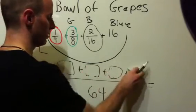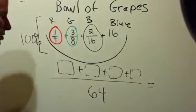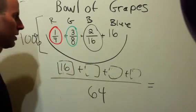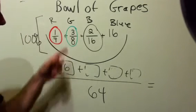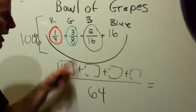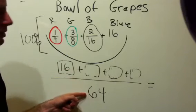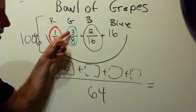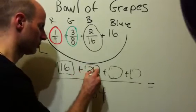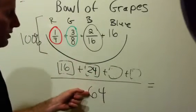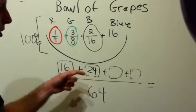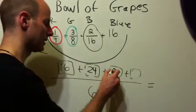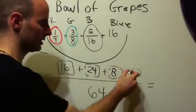Let's add up our parts now. One fourth of 64 is 16. Three eighths of 64, eight goes into 64 eight times, so I would do eight times three, that's 24. Sixteen goes into 64 four times, so I do four times two, I'd get eight. Plus another 16.